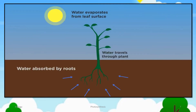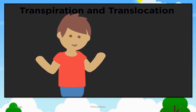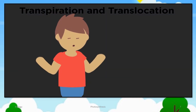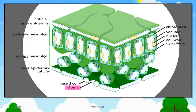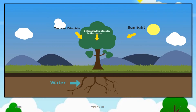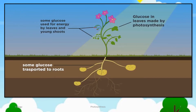Plants absorb water through their roots and it moves through the plants and into the leaves by transpiration. Watch our video on xylem and transpiration to learn more about this process. Carbon dioxide enters into the leaves from the air through the stomata on the underside of the leaf. Glucose and oxygen are made. Some of the glucose is used for respiration and some is converted into insoluble starch, which can then be stored and turned back into glucose at a later stage.